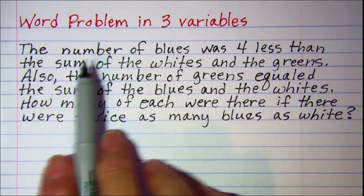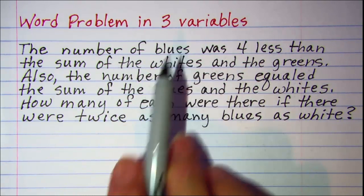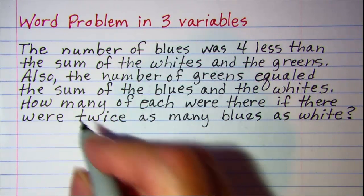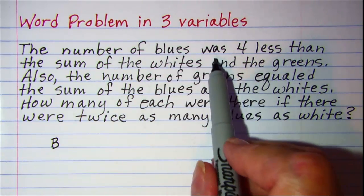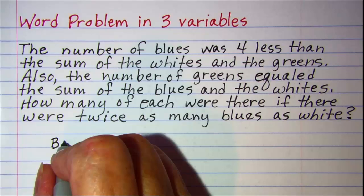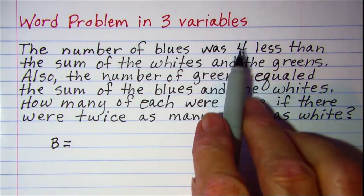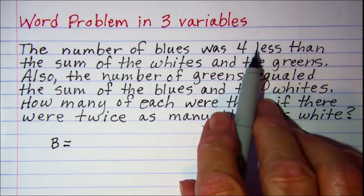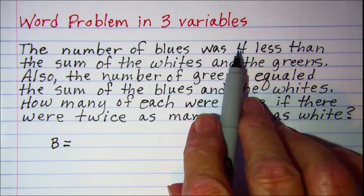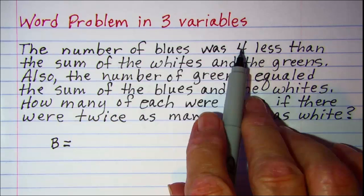In the first sentence, the number of blues, so we would write B was, that's where the equals is, four less than. Now whenever you see the words less than, you have to be careful. You're going to be subtracting four from something.